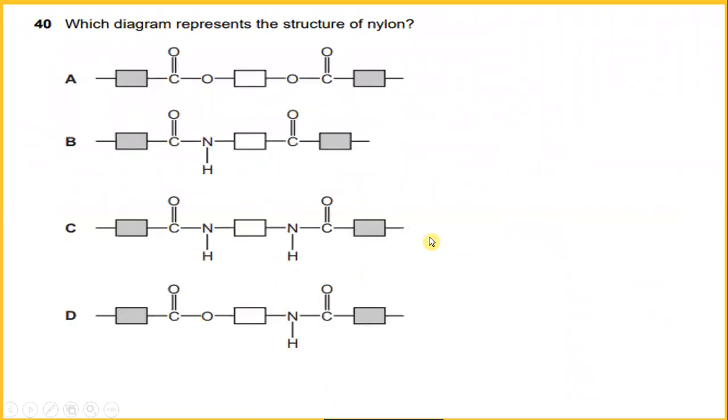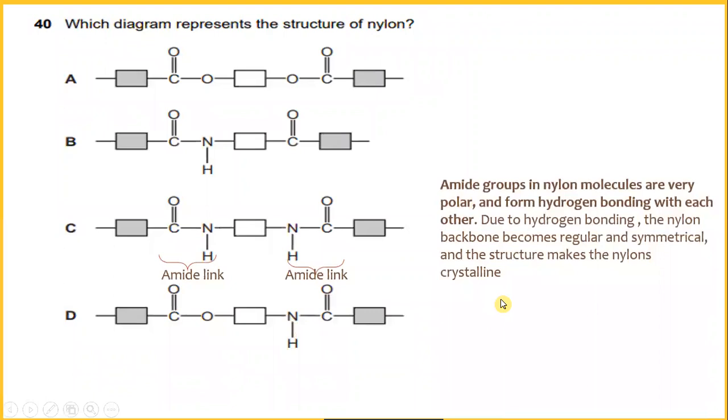Which diagram represents the structure of nylon? I would say the amide groups of nylon molecules are very polar and form hydrogen bonding with each other. Due to hydrogen bonding, the nylon backbone becomes regular and symmetrical, and the structure makes the nylon crystalline. So the answer would be C. You can see these are the amide links. We have nitrogen linked to hydrogen, and also nitrogen linked to hydrogen. So the answer would be C.